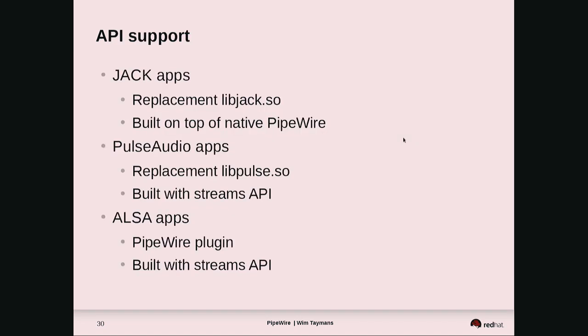What is interesting with this model is that you can support both Jack apps and Pulse Audio apps — and also other apps — simply by writing a replacement libJack and libPulse. You can basically use all of these APIs in one system. That's quite interesting.